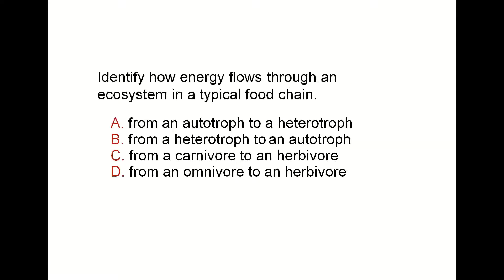Next: identify how energy flows through an ecosystem in a typical food chain. Food chains always start with a self-feeder, a producer — also called autotrophs. They are the main source of food and energy on earth, like plants and algae. Then the energy they have transfers to heterotrophs, which come in many categories: omnivores, herbivores, carnivores, detritivores, scavengers, and decomposers. So energy always flows from an autotroph to a heterotroph.